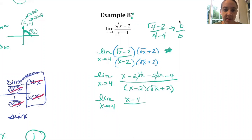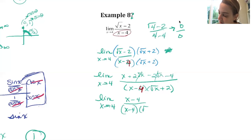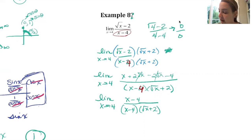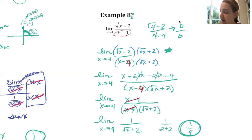There's a typo to fix — the denominator should be x minus 4, not x minus 2. With that corrected: what's exactly the same in the numerator and denominator is the quantity (x minus 4) — those cancel out. The numerator is now just 1. Don't forget there's still a 1 left up there, over (root x plus 2). Put 4 in for x: root 4 is 2, so this is 1 over (2 plus 2), which is 1 fourth.